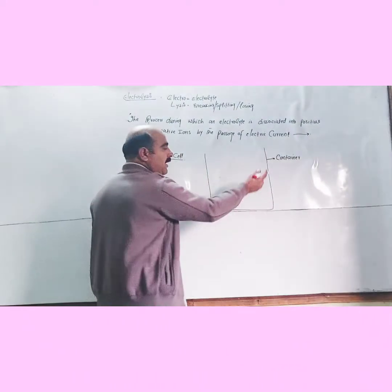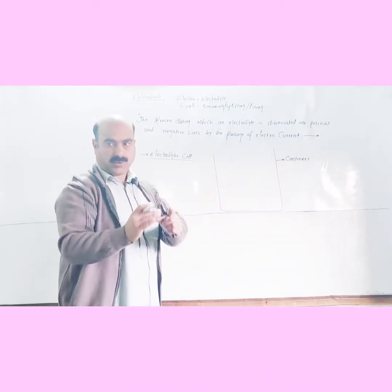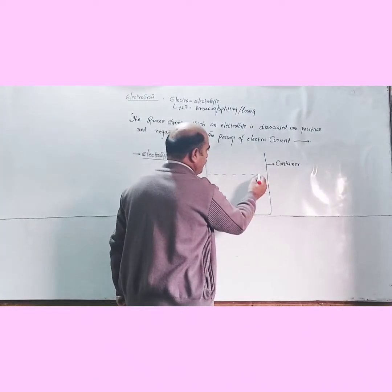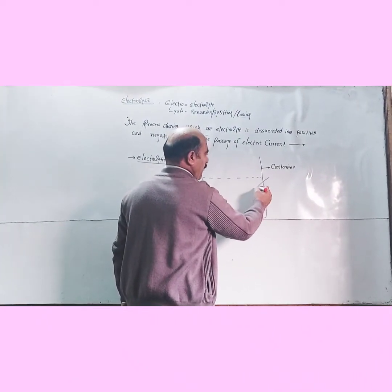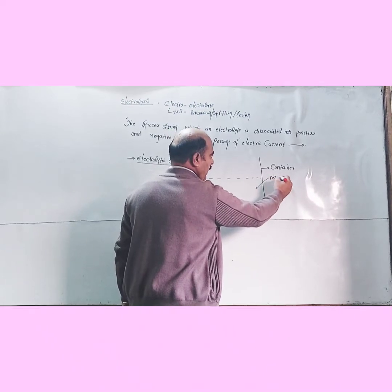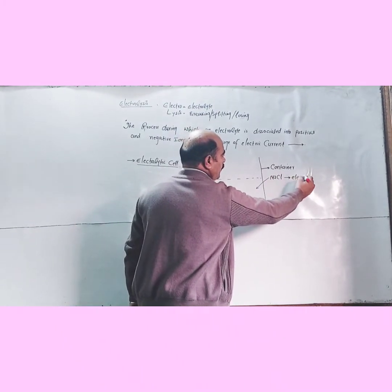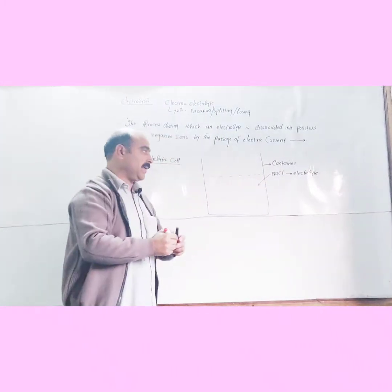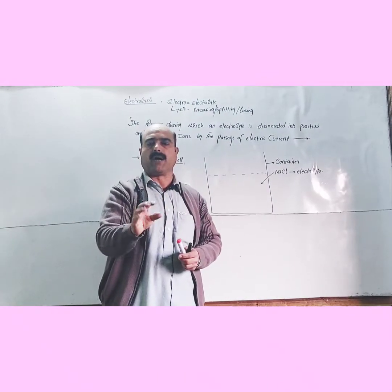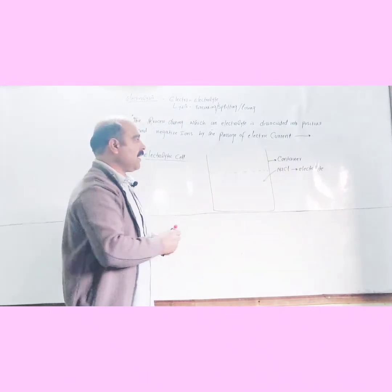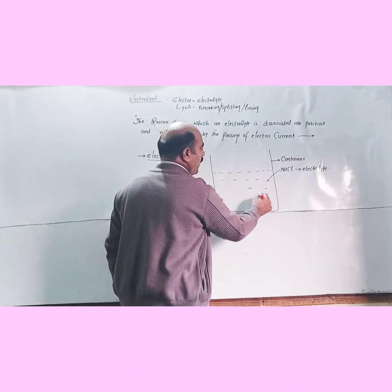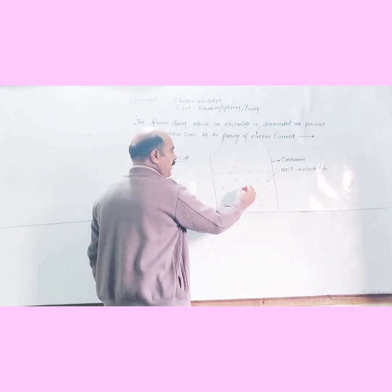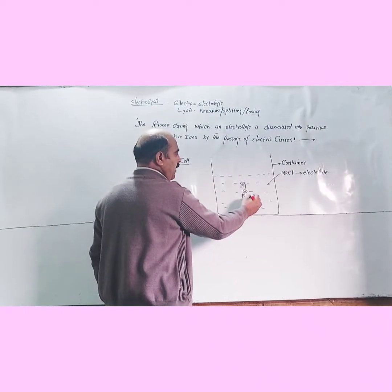The electrolytic cell contains an electrolyte dissolved in water. For example, sodium chloride (NaCl) is an electrolyte that, when dissolved in water, ionizes into positive and negative ions. Water acts as the solvent and the electrolyte ionizes into sodium ions and chloride ions.